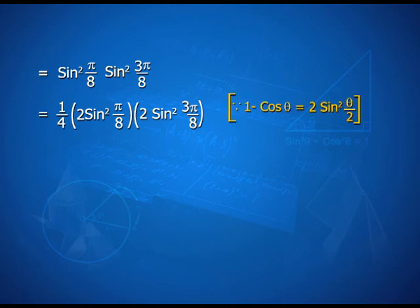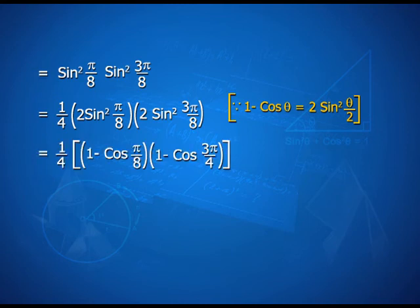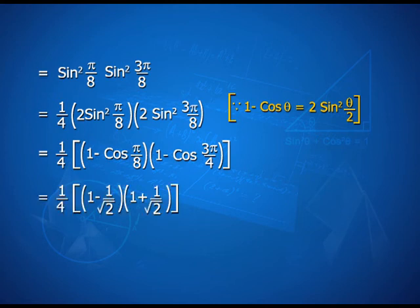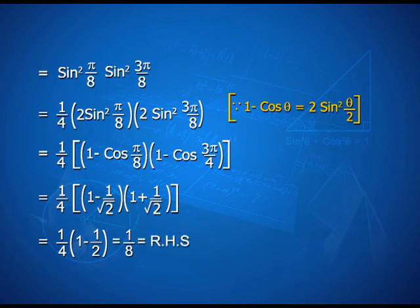Using the identity 1 − cos θ = 2sin²(θ/2), we rewrite as (1/4)·(1 − cos(π/4))·(1 − cos(3π/4)). Substituting the known values of cos(π/4) = 1/√2 and cos(3π/4) = −1/√2, this becomes (1/4)·(1 − 1/√2)·(1 + 1/√2) = (1/4)·(1 − 1/2) = 1/8, which equals the RHS.